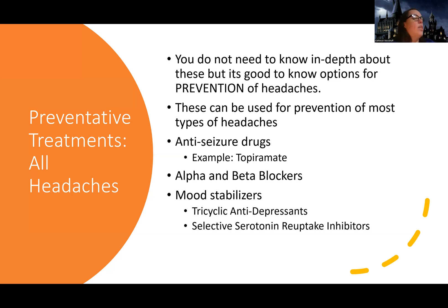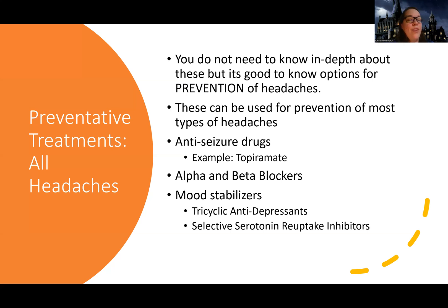Some of the medications we use are anti-seizure drugs — specifically one called topiramate. We're also using alpha and beta blockers. Think of your ABCs: alpha, beta, and calcium. The alpha and beta blockers can be used for tension and migraines. Some may also be used for cluster headaches, but remember with cluster headaches we also like that C — calcium channel blockers — for prevention.